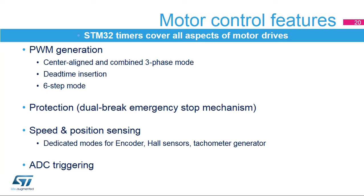The timer includes four main electrical motor control features: specific PWM modes including center-aligned and combined three-phase PWMs, dead-time insertion for complementary PWM generation, and six-step mode for driving brushless DC motors. It includes power stage protection with a dual-level emergency stop mechanism to disable PWM outputs by hardware in case of fault. It handles common sensors including quadrature encoders and hall sensors for position feedback and tachometer generators for speed feedback. It also includes synchronized ADC triggering options to properly manage voltage and current sensing and avoid acquisition issues due to switching noise.